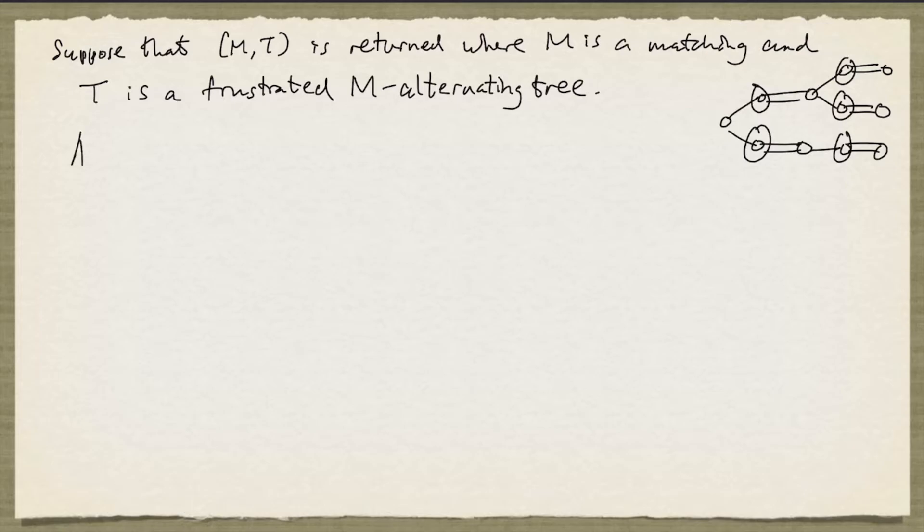And without loss of generality, we may assume that all the matching edges belong to the tree. Because we can throw away edges that are not in the tree, and we'll still end up with T being a frustrated M alternating tree.